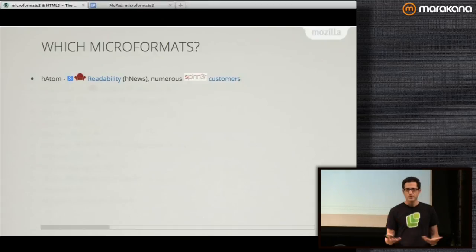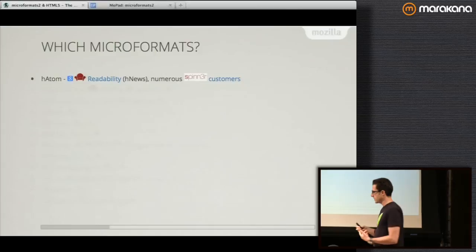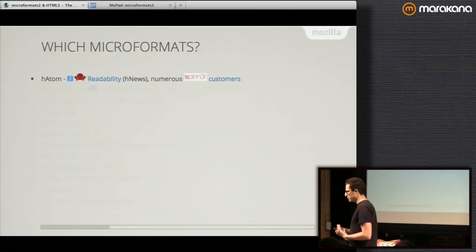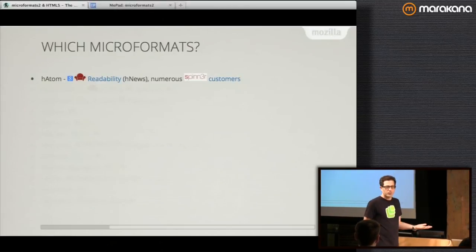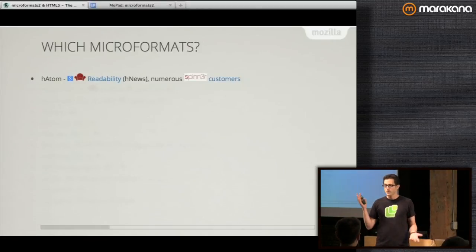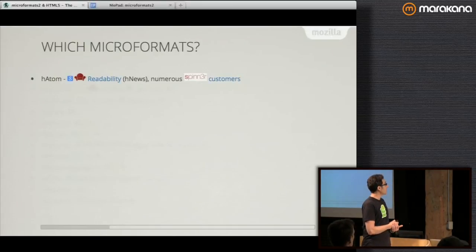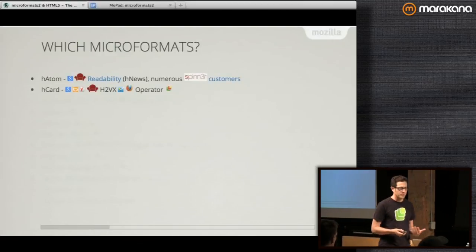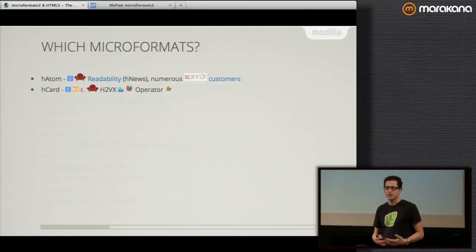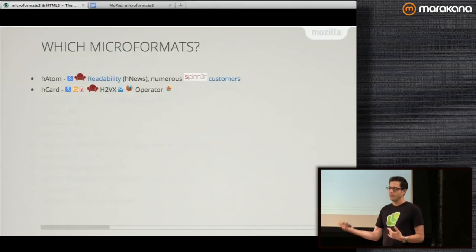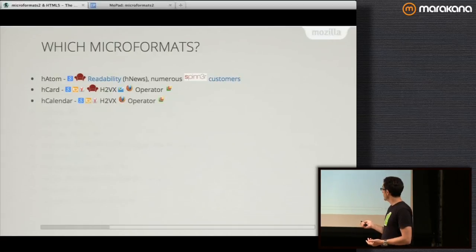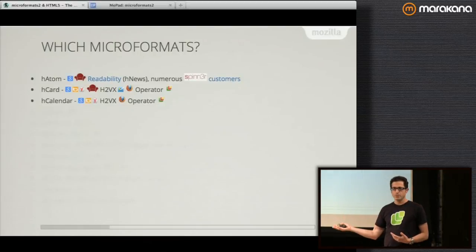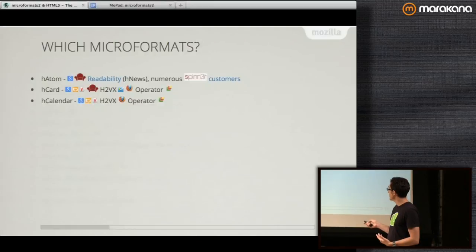Which microformats? Over the years, about a dozen microformats have survived the crucible of real-world implementation and tests — those are the ones that matter. H-atom is for readability and periodic information, with numerous consumers. H-card is the fundamental building block for people and organizations — if you have any information about people on your site, like a social network, mark up their profiles with h-card. H-calendar is for events. H-media is for pictures or video — Google recently started consuming it, showing up in the Webmaster dashboard.